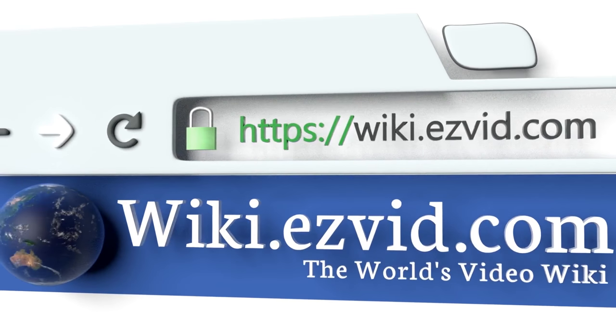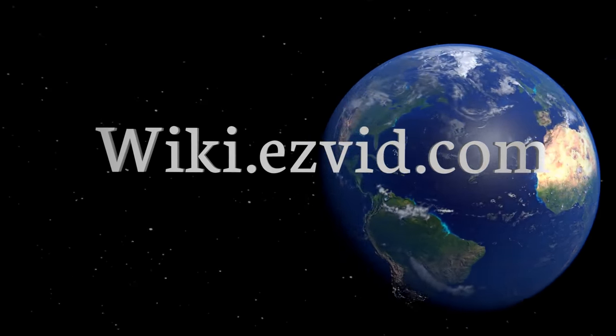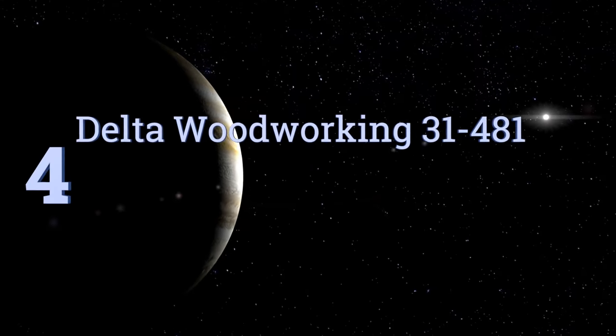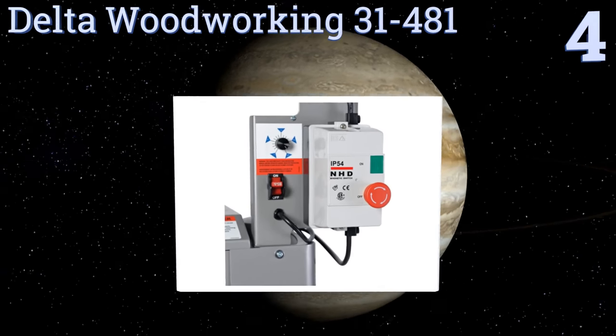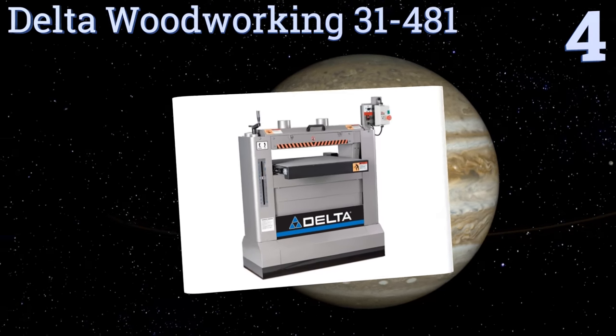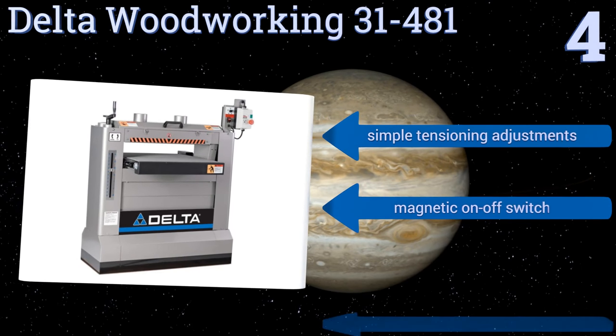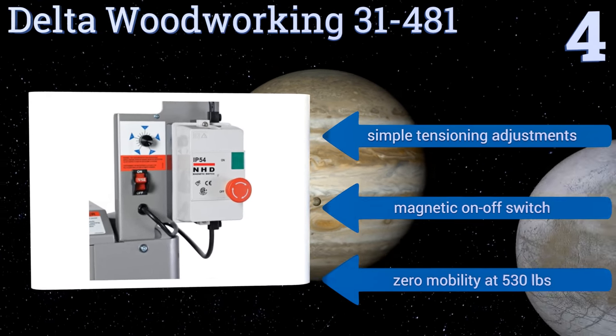To see all of our choices, go to wiki.easybid.com and search for drum sanders or click beneath this video. At number four, dual dust ports on the Delta Woodworking 31-481 make for a practically debris-free environment. The unit's three horsepower, 230-volt main motor provides the kind of force needed to ensure professional quality results for paying customers in a timely manner. It boasts simple tensioning adjustments and a magnetic on-off switch.